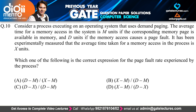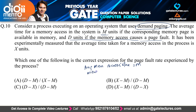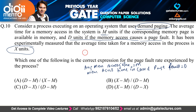Question 10 considers a process using demand paging. The average memory access time is M, and if a page fault occurs, the access time is D. It has been experimentally measured that the average memory access time is X. We need to find the correct expression for the page fault rate experienced by the process.